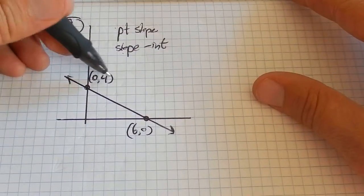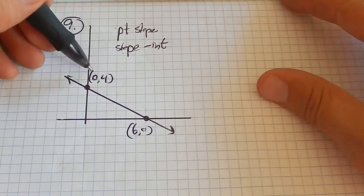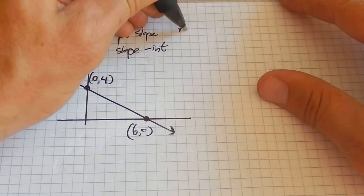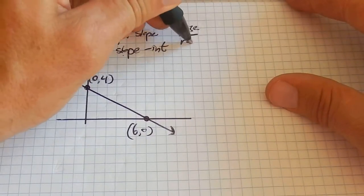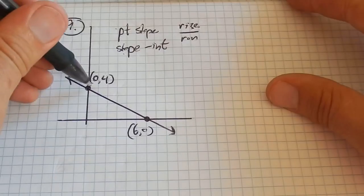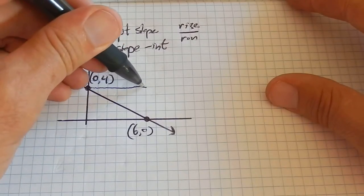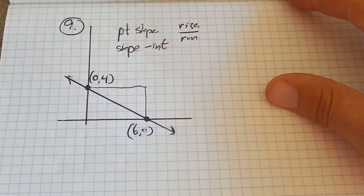And notice I have a y-intercept right here. So I already know it's going to be a plus 4 in it. I just got to figure out the slope. And remember, slope is rise over run, how steep this thing is. So I'm just going to think about a triangle. Notice I go straight across on the grid, and then straight down on the grid.